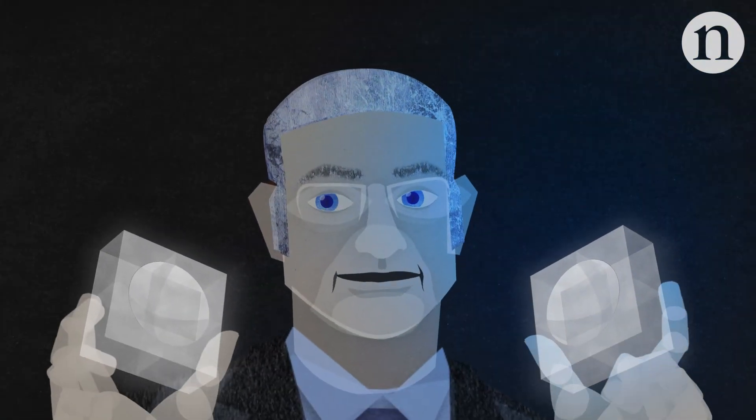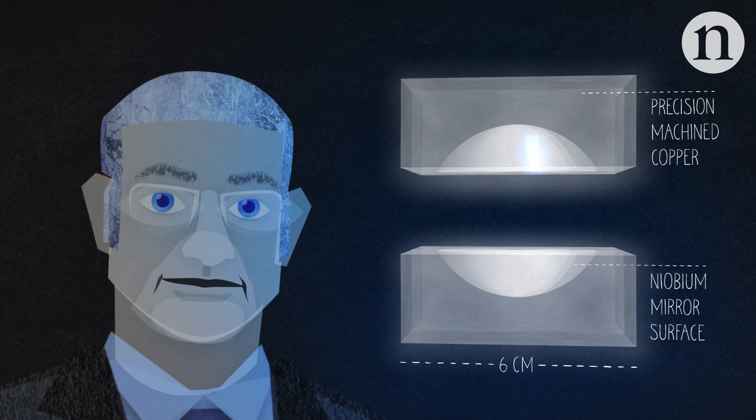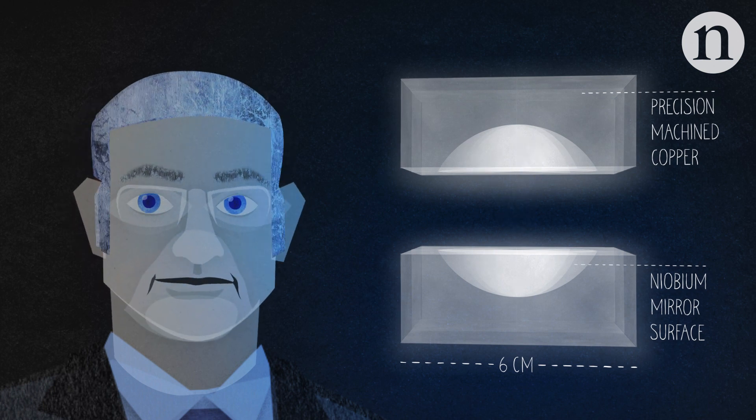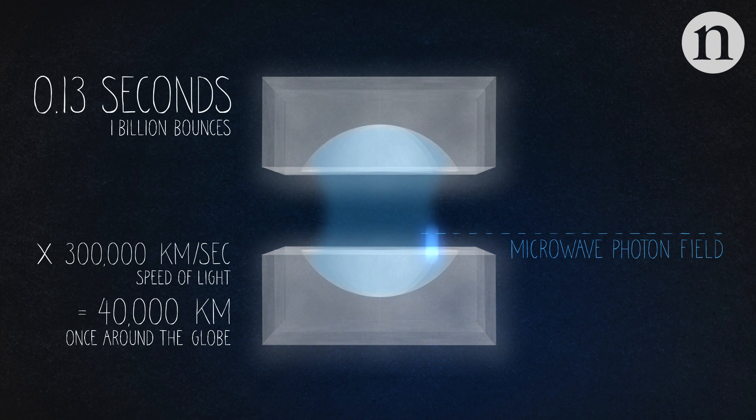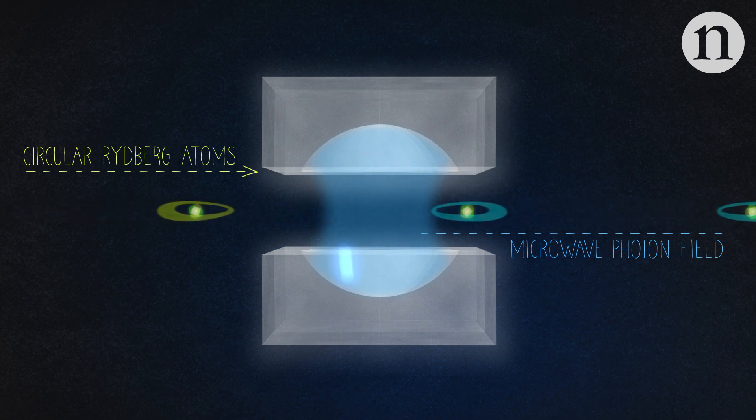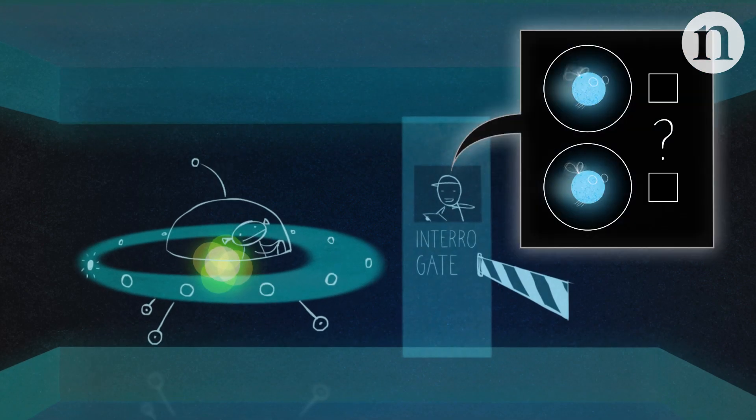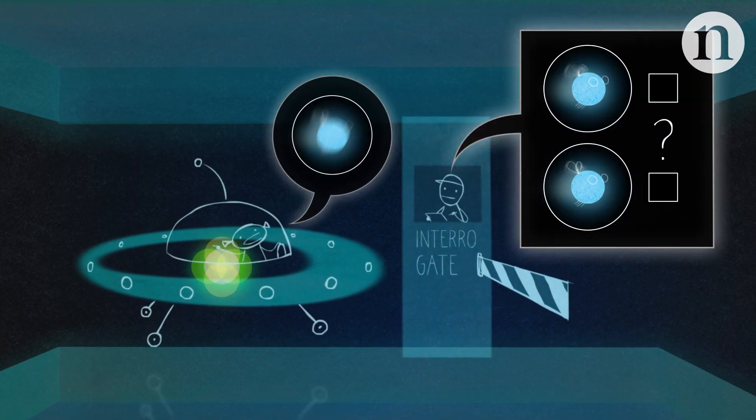The solution first was to have a very good box, a box which can keep the photons bouncing inside for very long times. We were able to keep the photons for about one-tenth of a second, and then we sent atoms one by one through the box. The atoms were just picking some information from the photons, getting out, and then we interrogated the atoms to ask them what they had seen in the box.